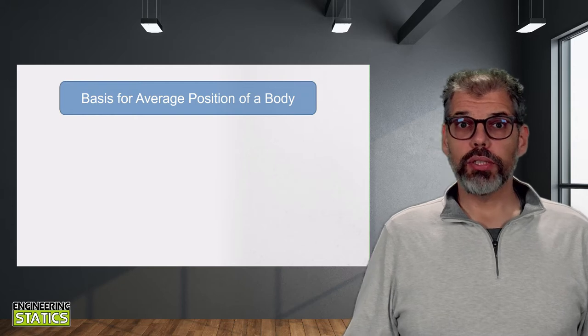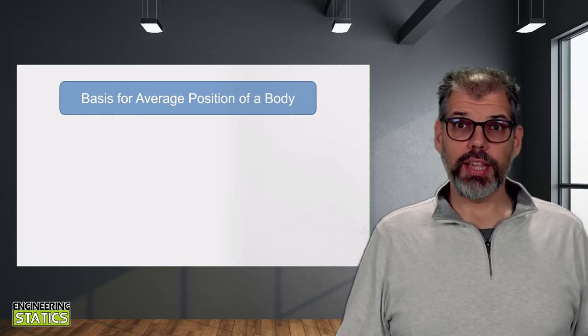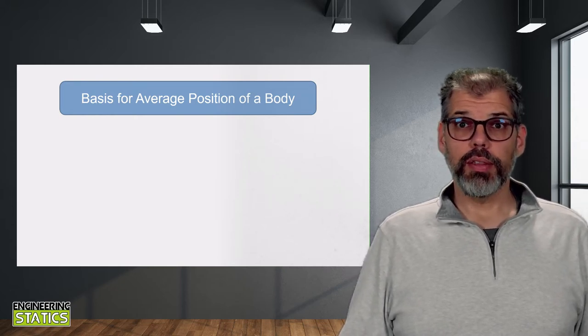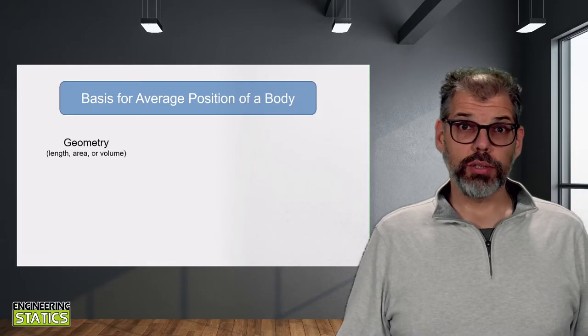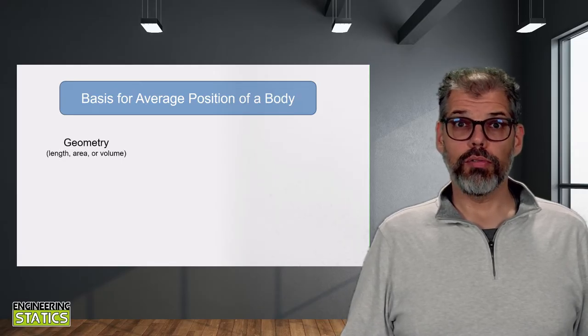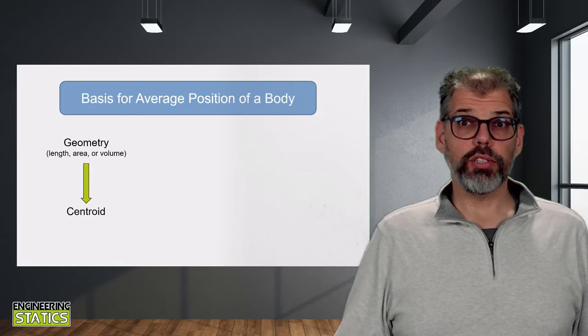In engineering problems, we tend to use three different bases for defining the average position of a body. The average geometrical position, based on length, area, or volume. We call this average position the centroid.